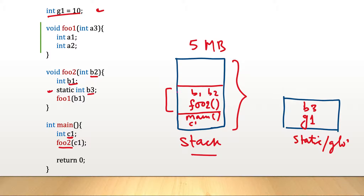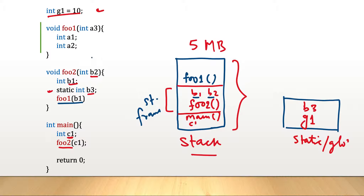Any function that is on the top of the stack is currently executing. Main had started executing, but main called foo2, so main has not returned yet — foo2 will return first, then main will resume execution. foo2 then calls foo1, so before foo2 returns, foo1 needs to execute. foo1 is pushed onto the stack and its variables a1, a2, and a3 are placed in foo1's stack frame.